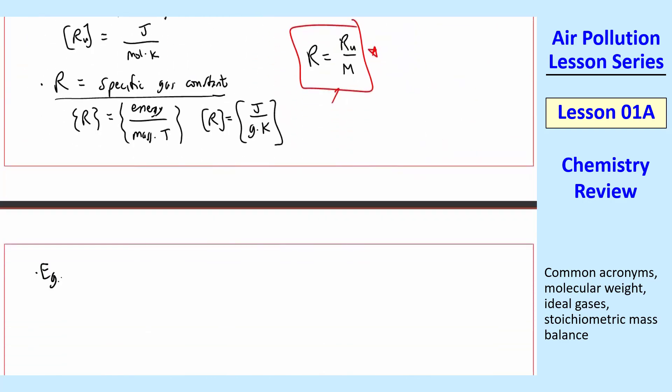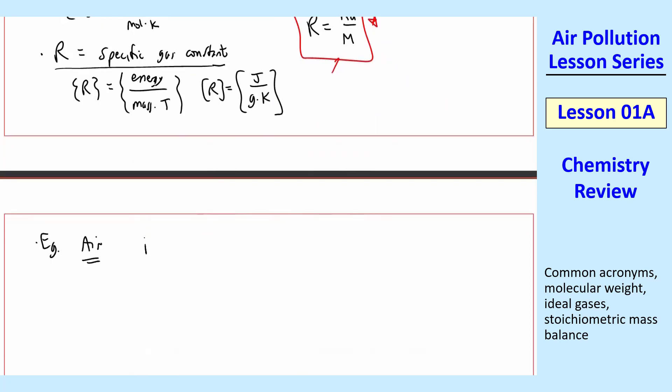So for example, let's take air, since we're talking about air pollution, and air will be the main gas in this course, which we're assuming is an ideal gas. So R of air is equal to Ru over M of air.